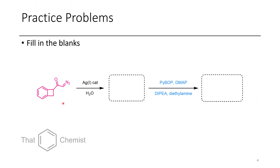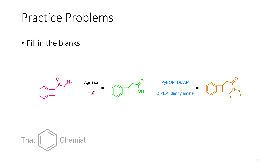In this next problem, we start with this alpha-diazo ketone. What we have to do here is an interesting Wolff rearrangement. First we go through a ketene, which can then get hydrolyzed by water, forming this carboxylic acid product. If we wanted to get this amide product, we can use PyBOP and DMAP in the presence of diisopropylethylamine and diethylamine. Since diethylamine is our nucleophile, we get this amide as our product.